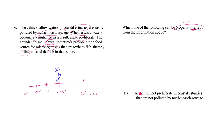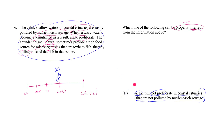D says: 'algae will not proliferate in coastal estuaries that are not polluted by nutrient-rich sewage.' We're talking about the non-nutrient-rich-sewage-polluted kind of coastal estuary, and claiming algae won't proliferate there. But we just don't know if that's true on the basis of this information. The stimulus tells us sewage-polluted estuaries cause algae proliferation — but could algae proliferate under other conditions? Big question mark.